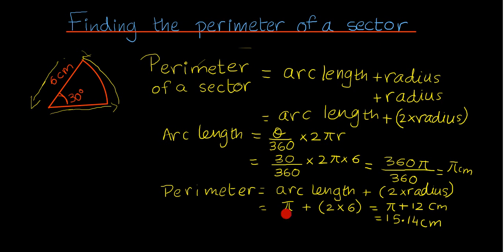And in order to find the perimeter, use the arc length here. The radii is 6 centimeters, as mentioned here—there's one here and there's one at the bottom—so 2 times the radius, 2 times 6 centimeters over here is 12 centimeters. π plus 12 centimeters will give you 15.14 centimeters to two decimal places, and that is the perimeter of this particular sector. That would mean that the distance around the sector would be 15.14 centimeters. Thank you for watching.